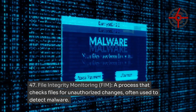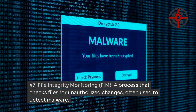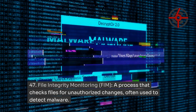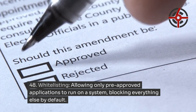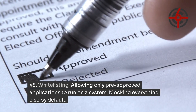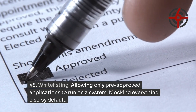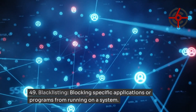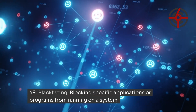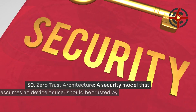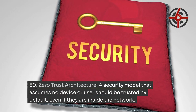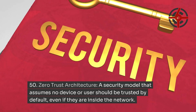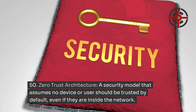File Integrity Monitoring (FIM): a process that checks files for unauthorized changes, often used to detect malware. Whitelisting: allowing only pre-approved applications to run on a system, blocking everything else by default. Blacklisting: blocking specific applications or programs from running on a system. Zero Trust Architecture: a security model that assumes no device or user should be trusted by default, even if they are inside the network.